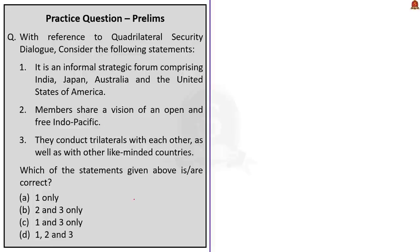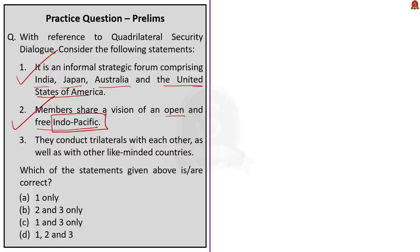Now the last question. With reference to the Quadrilateral Security Dialogue, consider the following statements. Statement 1: It is an informal strategic forum comprising India, Japan, Australia and the United States of America. Statement 2: Members share a vision of an open and free Indo-Pacific. Statement 3: They conduct trilaterals with each other as well as with other like-minded countries. All three statements are correct: the Quad comprises those four countries, one of its objectives is to ensure an open and free Indo-Pacific, and the Quad constituents do conduct trilaterals with each other and with like-minded partners. The answer is Option D — 1, 2 and 3.